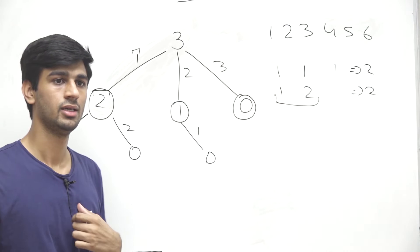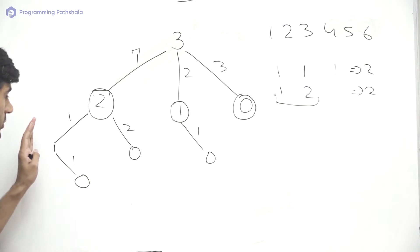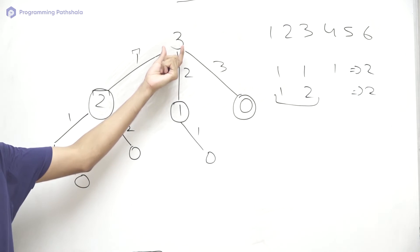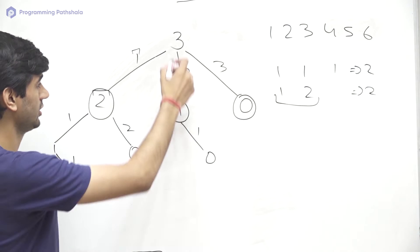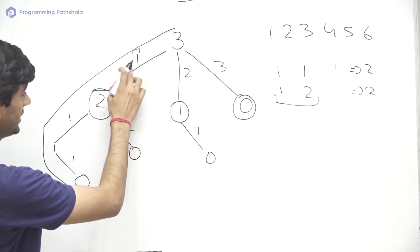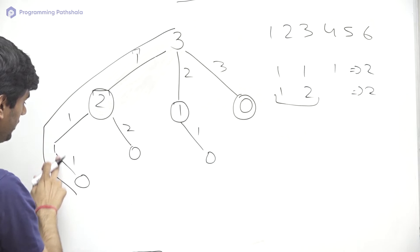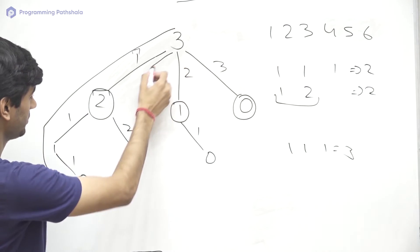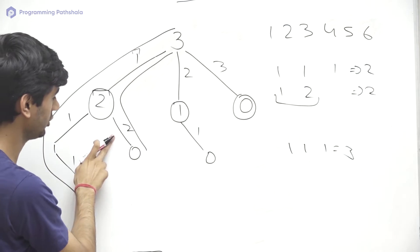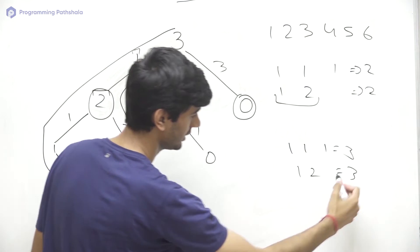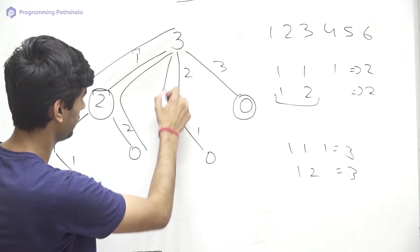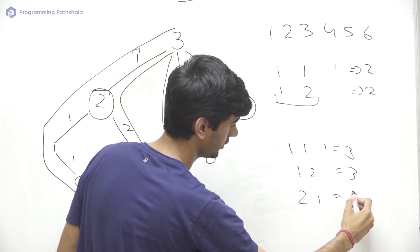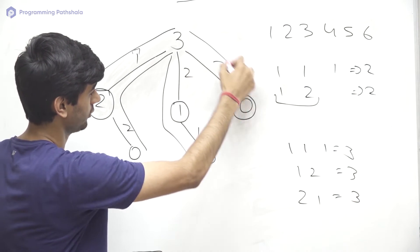Now we can observe that all the root-to-leaf paths in this recursive tree represent one of the ways to get sum equal to 3. For example, one path shows: first row 1, second row 1, third row 1 — that sums to 3. Another path: first row 1, second row 2 — also sums to 3. Another: first row 2, second row 1 — sums to 3. And the last: first row 3 directly — also sums to 3.